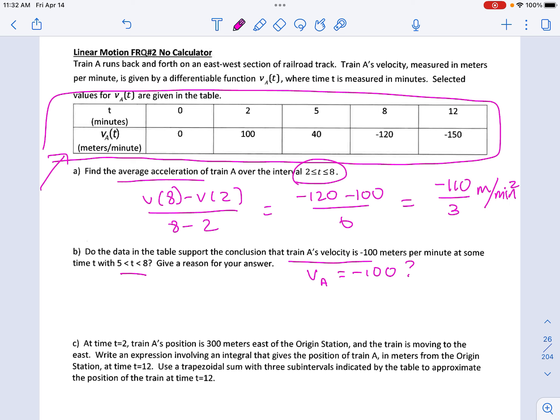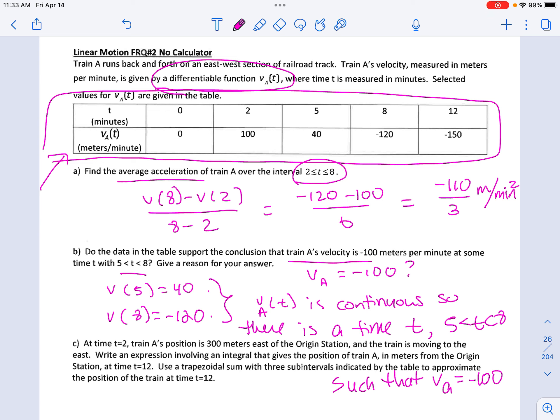So remember, if we want to try to figure out if a function hits a certain y value, we should be thinking intermediate value theorem. So notice that the velocity at 5 is 40, and the velocity at 8 is negative 120. So they told us that this is a differentiable function, which means that it's also continuous. So the answer is yes. It has to hit every single y value from negative 120 and 40 because the function is continuous. There's no holes or gaps. So your reason would be, you show me these two, and you say the velocity function of train A is continuous. So there is a time t between 5 and 8. We don't know what that time is. Such that the velocity of A is negative 100. So you must state that it is continuous.